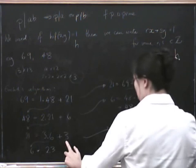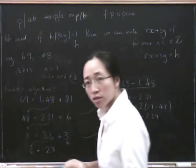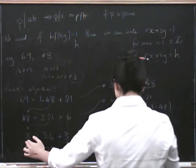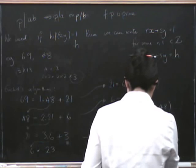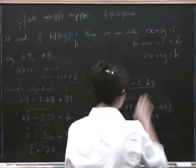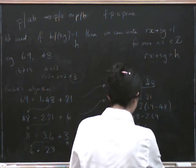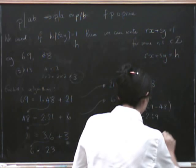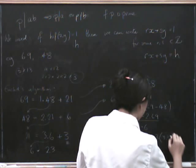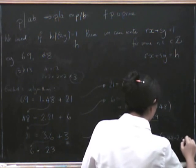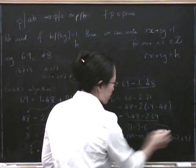Now we take the next row, which gives us 3. This is the final moment because we are trying to get 3 in terms of some other stuff. So that's 21 − 3 × 6. We plug in our value for 21, which is 69 − 48, and we take away 3 times our value for 6, which is 3 × 48 − 2 × 69.